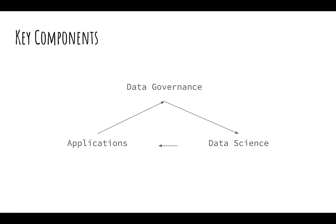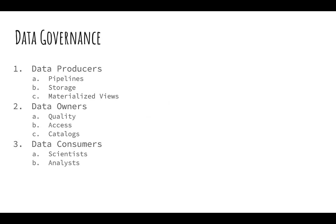The key components of any platform we build today to do ML and AI research is data governance, data science, and applications, and these things absolutely flow in the directions that arrows are showing. Each one is made up of several key pillars, and Foundry is no exception. Within data governance, generally you have data producers, which are made up of data pipelines and storage systems, materialized views of pipelines like aggregating data into time series or other aggregate views. You also have data owners responsible for data quality and access, and data consumers - your scientists and analysts actively using this data to help organizations make decisions.